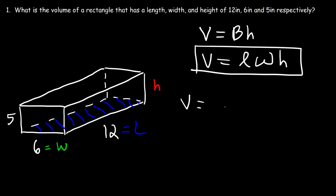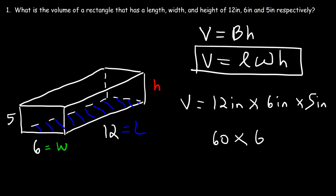The length is 12 inches, the width is 6 inches, and the height is 5 inches. 12 times 5 is 60, and 60 times 6 — well, if 6 times 6 is 36, then 60 times 6 is 360; you just add the extra zero. The units of volume are inches times inches times inches, that's inches cubed, or cubic inches. So the volume is 360 cubic inches.